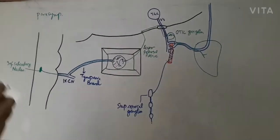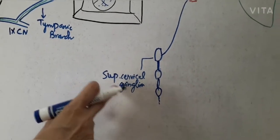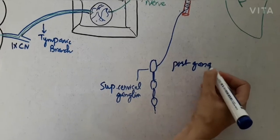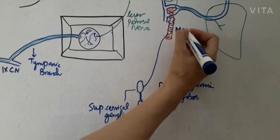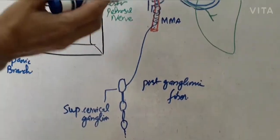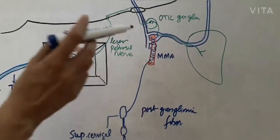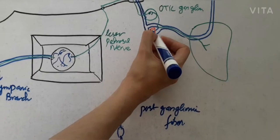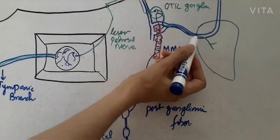Next is the sympathetic root. These are postganglionic fibres that surround the middle meningeal artery as they travel along vessels. The auriculotemporal nerve, through its two roots, is attached to the mandibular nerve, and the middle meningeal artery passes between these two roots — an important point for MCQs. The sympathetic fibres surround the middle meningeal artery, enter the ganglion but pass without relay, travel along the parasympathetic fibres, and also reach the parotid gland.